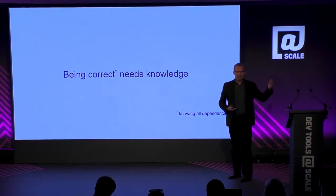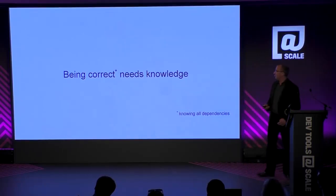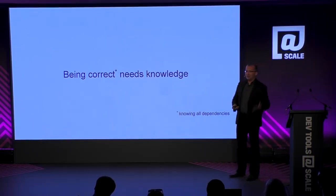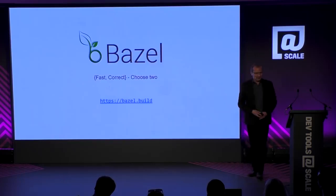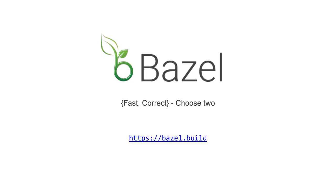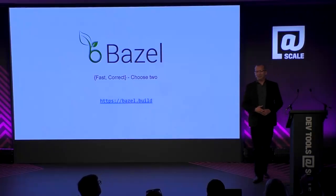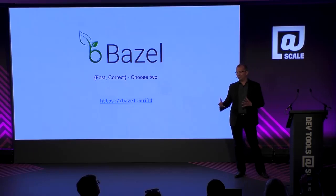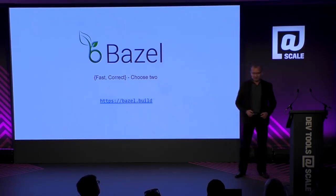So that's all there is to build systems: they have to be fast, they have to be correct. I work on Bazel, and Bazel is an open-source version of Google's own build system — or rather, it is the build system Google uses internally. Some parts of it are not yet open-source, but it's the same code base. It's been in development for maybe a decade, open-sourced about two years ago, and we're still on our way to version 1.0.